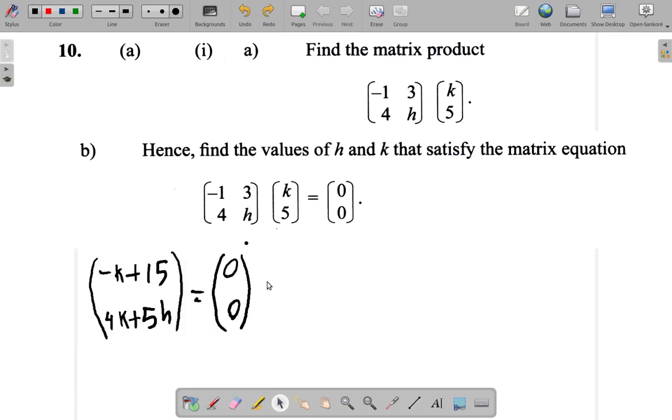With all of this now, what you can see is that negative K plus 15 is equal to 0, according to the top rows here, row 1. And at the same time, 4K plus 5H is equal to 0. Let's look at what's happening up here. Negative K plus 15 is equal to 0.